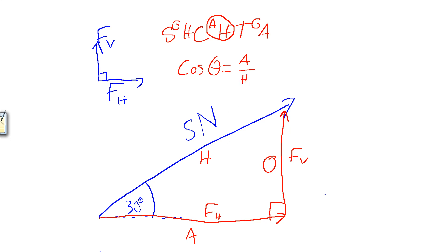Now, our hypotenuse is the five newtons, and our adjacent is the side that we want to know. So, we need to rearrange this to make the adjacent our subject, and then we can substitute in the values. So, our adjacent is equal to H, the hypotenuse, times the cosine of our angle.